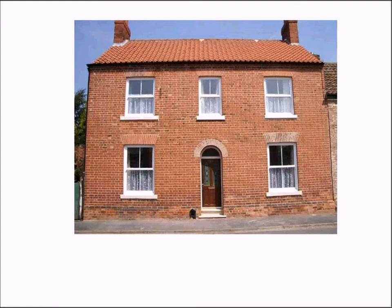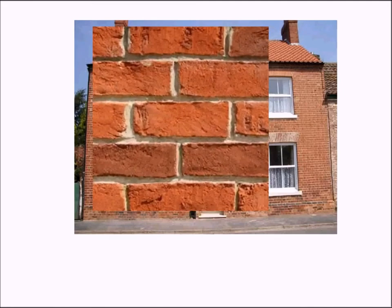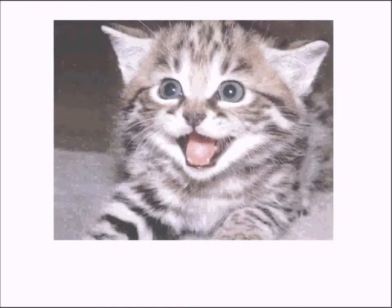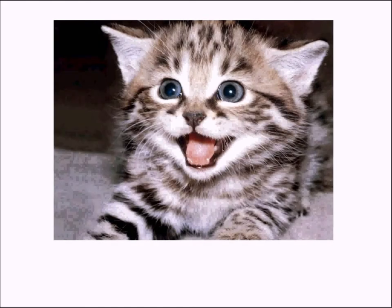If we take a look at this house, you can see that a house is made up of individual units and the units are called bricks. So if we take a living organism like this kitten, what's a living organism made up of? It's made up of individual units and those units are called cells.